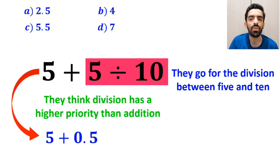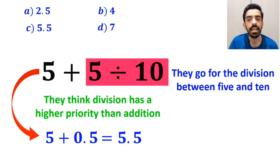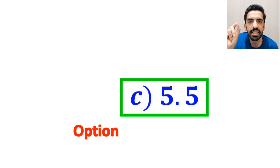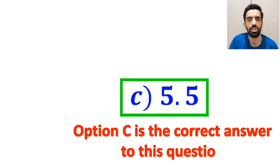And, they rewrite this expression as 5 plus 0.5, which ultimately gives them the answer 5.5. And, immediately, they conclude that option C is the correct answer to this question.